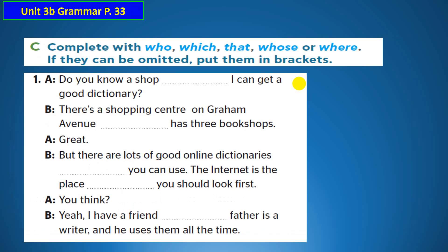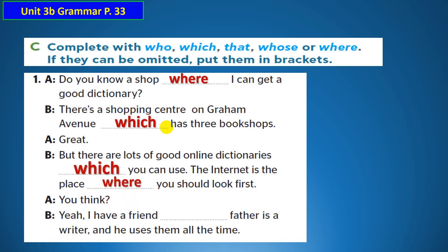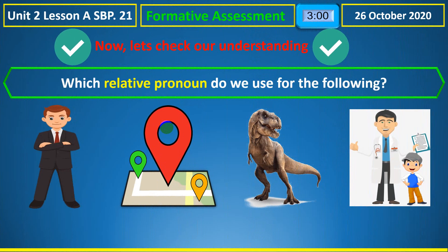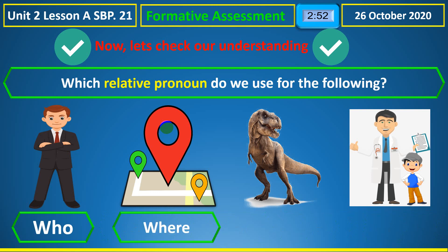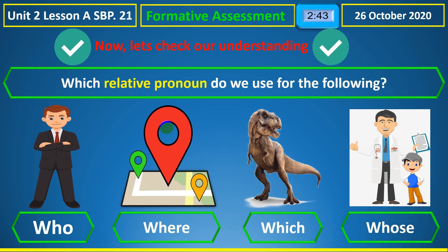The chair which is made of plastic — I use 'which' for things. Do you know the shop where I can get a dictionary? Shop is a place, so I use 'where'. There is a shopping center which has many stores. There are online dictionaries — I use 'which'. I have a friend whose father is Ryan and he uses them all the time. To summarize: 'who' for people, 'where' for places, 'which' for animals and things, and 'whose' for possession.